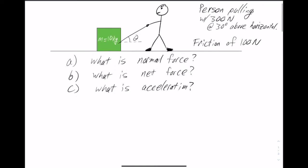In this problem about adding forces, we have a person pulling a 10 kilogram box across a horizontal surface. They're pulling with a force of 300 newtons directed at 30 degrees above the horizontal, and we're told there's a force of friction of 100 newtons. Later in this unit we'll learn more about how to calculate the force of friction from the properties of the box and the surface, but for now we'll just take that force as given.